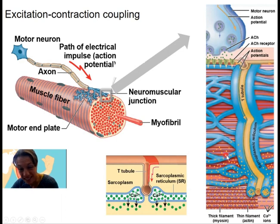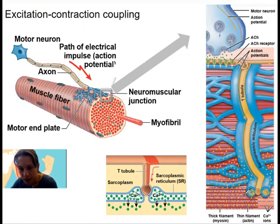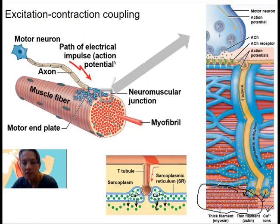Putting this image together with the previous one is helpful. Here's the T-tubule with the action potential traveling down. When that junctions with the sarcoplasmic reticulum, calcium flows out of the sarcoplasmic reticulum into the sarcoplasm of the muscle cell — not into the T-tubule. Calcium then contacts the myofilaments, and that's how it connects to and initiates contraction.